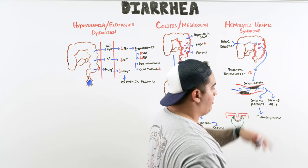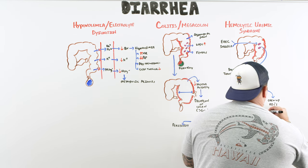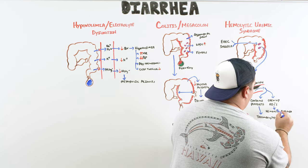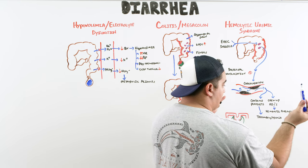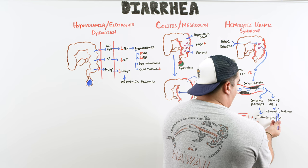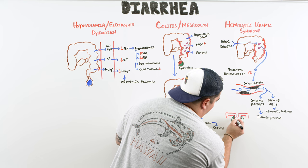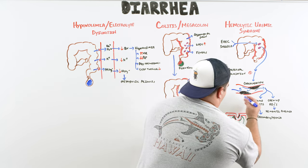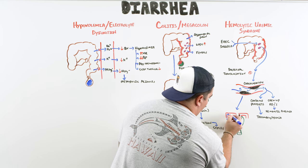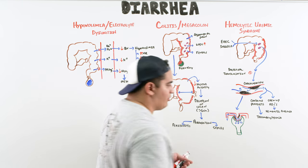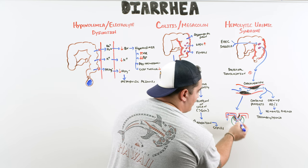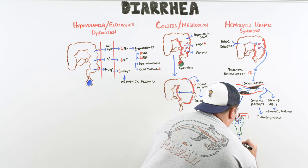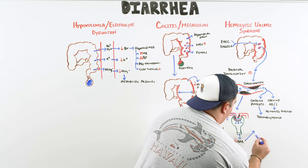When red blood cells are chewed up and destroyed, that produces hemolytic anemia. The clots also occur in smaller vessels throughout the body — most unfortunately in the kidneys within the glomeruli, altering renal perfusion and filtration. This drops the GFR, decreases urine output, and injures the kidneys.